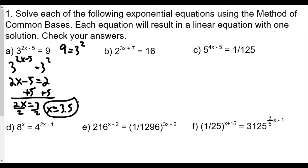To check: plugging x = 3.5 back in, 2 times 3.5 is 7, and 7 minus 5 is 2, so we get 3 squared which equals 9. That works out. A little mental math confirms the answer.